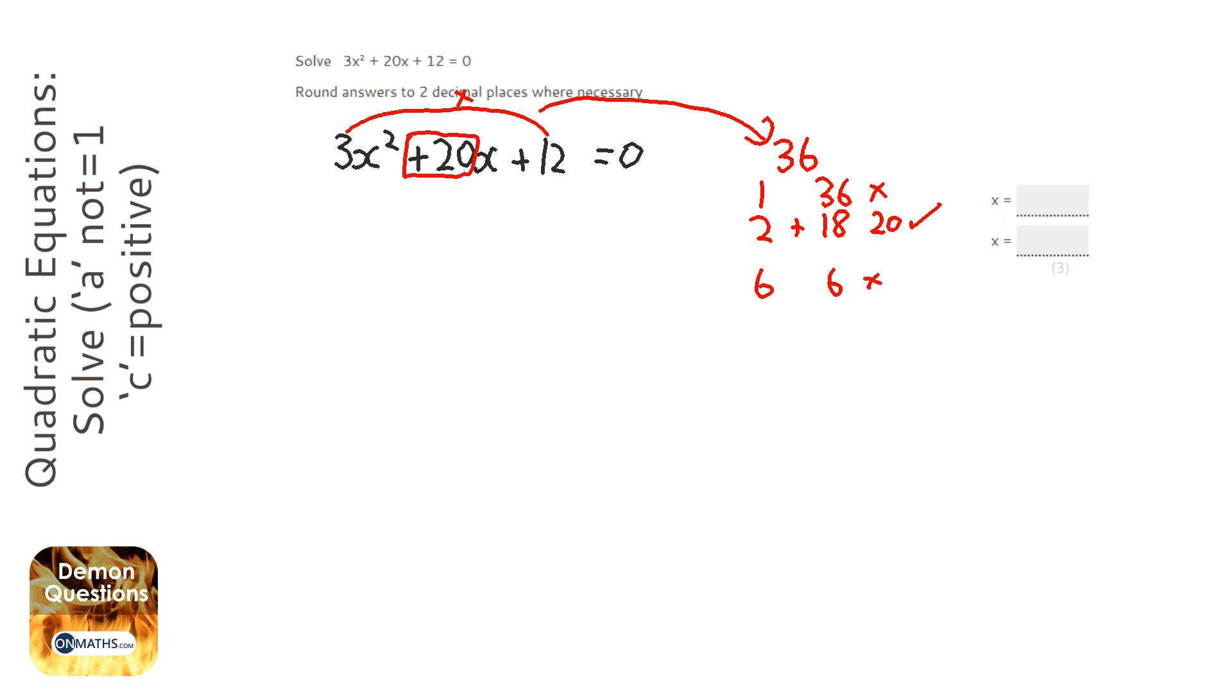Next step is I need to split that 20x up into the 2 and the 18. So, I'm going to rewrite this, and I'm going to split that 20x. Instead of 20x, I'm going to write plus 18x plus 2x plus 12 equals 0.